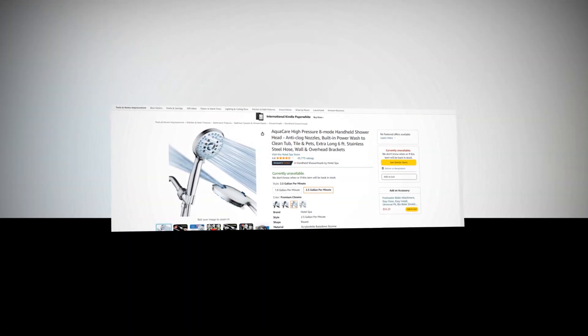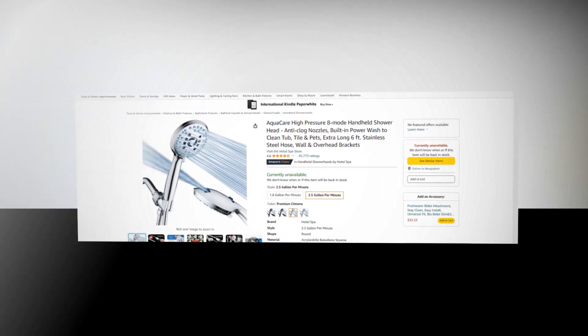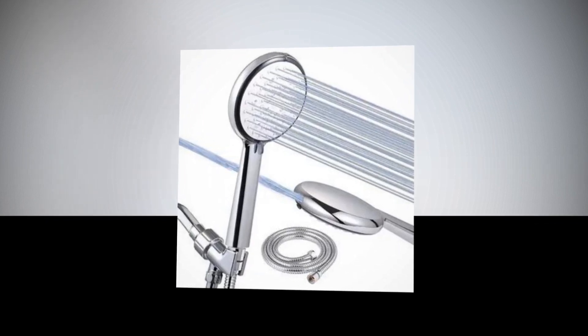Let's find out about the best AquaCare high-pressure 8-mode handheld shower head, featuring anti-clog nozzles, built-in power wash to clean tub, tile and pets, extra-long 6-foot stainless steel hose, and wall and overhead brackets.